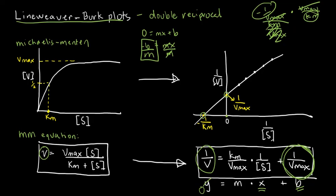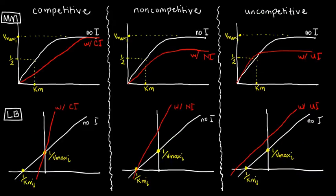If you already have an idea of a Lineweaver-Burk plot, we can use that to look at enzyme inhibition plots in a different way. Before, I used Michaelis-Menten plots, but since I mentioned that Lineweaver-Burk plots are relatively easier to interpret, we're gonna convert the Michaelis-Menten plots of enzyme inhibition to Lineweaver-Burk plots like so.